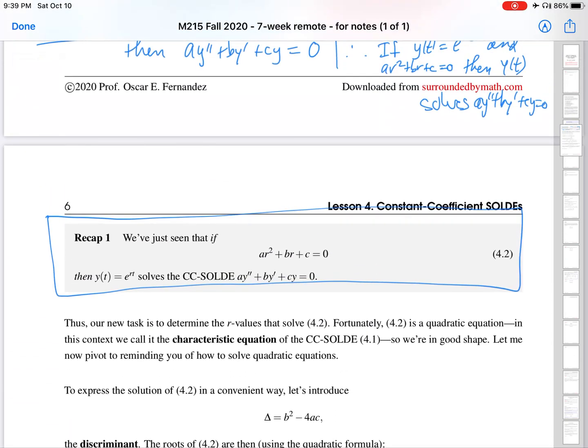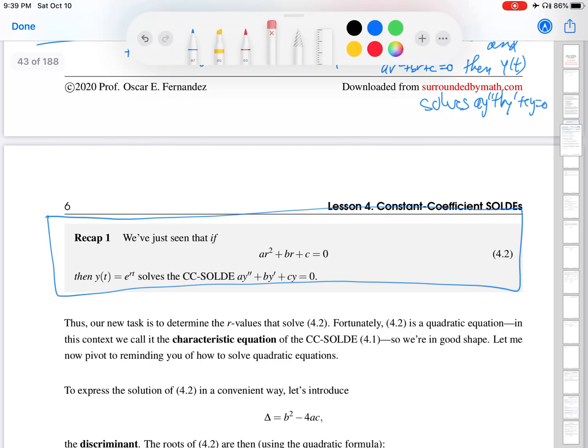This was covered in the previous video, but here is the most important point: to solve a constant coefficient SOLDE, the solutions have the form e to the rt, so long as r solves this, which we call the characteristic equation.